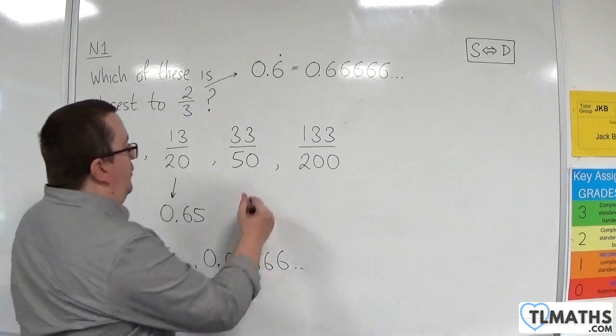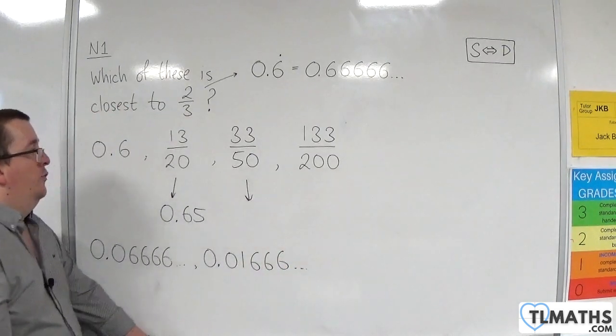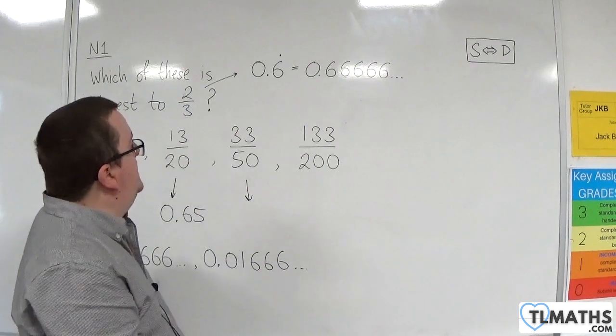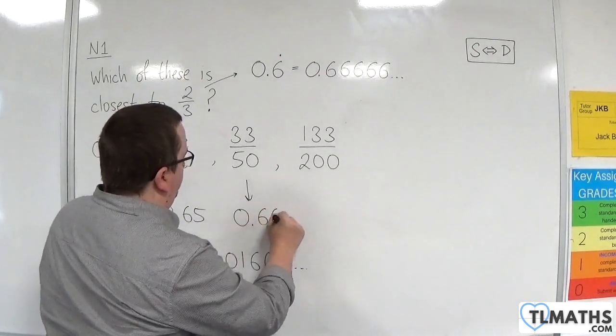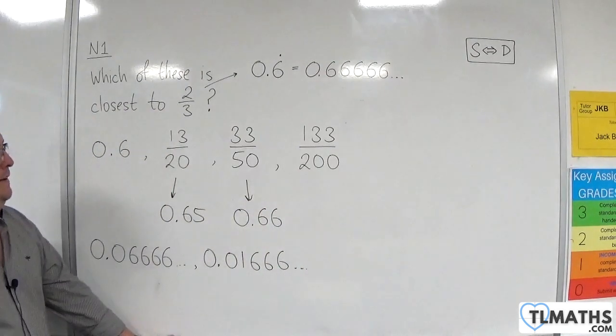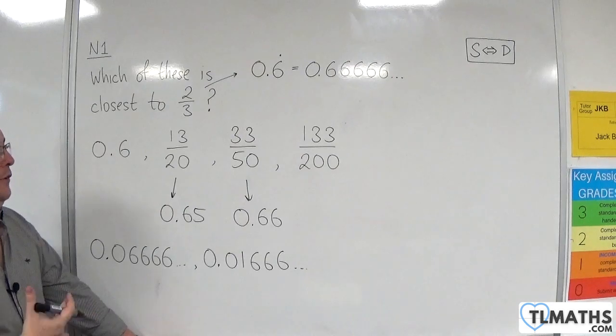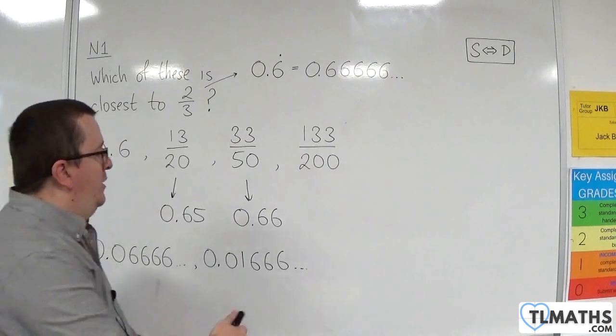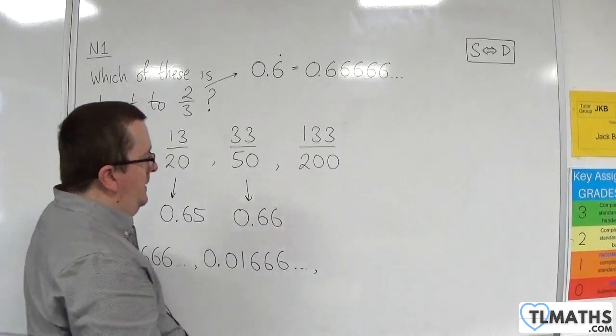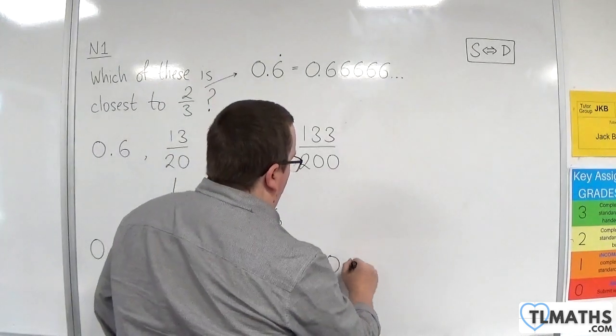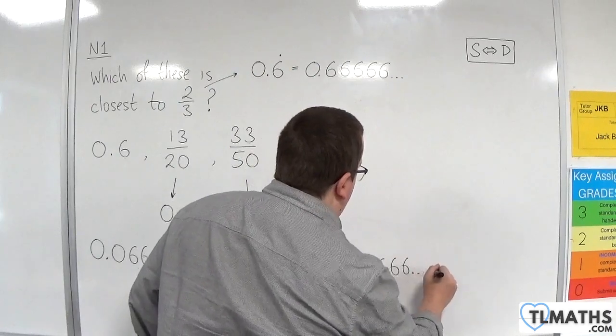So let's go on to the next one. So we've got 33 over 50, which will be 0.66. Okay, now that is even closer still. And again, we could check that by subtracting 0.66, so 0.6 recurring, and you would get 0.00666, etc.